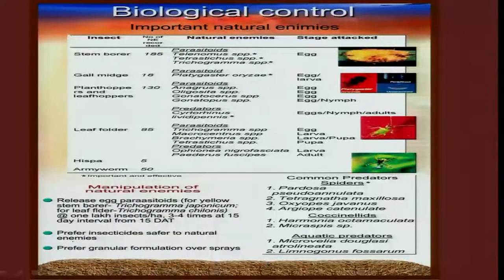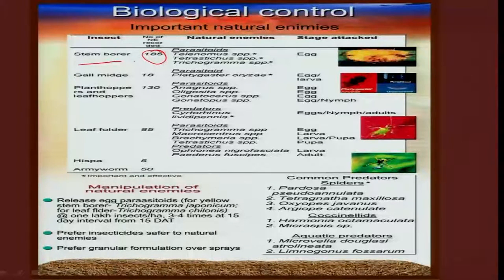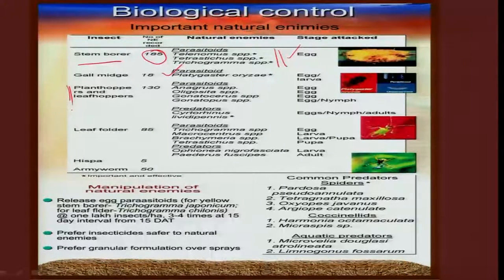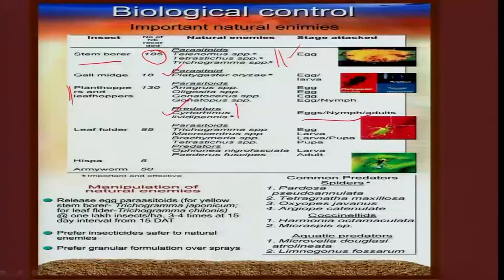Biological control is an important component in paddy IPM. A large number of natural enemies have been reported in the paddy ecosystem. For stem borer alone, about 185 natural enemies have been reported, with egg parasitoids dominating — particularly Telenomus, Tetrastichus, and Trichogramma species. For gall midge, parasitoids are most important. For plant hoppers and leaf hoppers, many parasitoids and predatory bugs are significant. The predatory bug Cyrtorhinus lividipennis plays a key role in reducing population as it preys on eggs, nymphs, and adults — all stages of brown plant hopper.